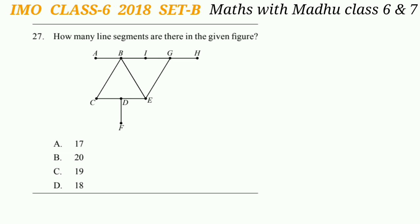Question 27: How many line segments are there in the given figure? Looking at the figure carefully and counting the number of line segments, the correct answer is option A — there are 17 line segments in the given figure.